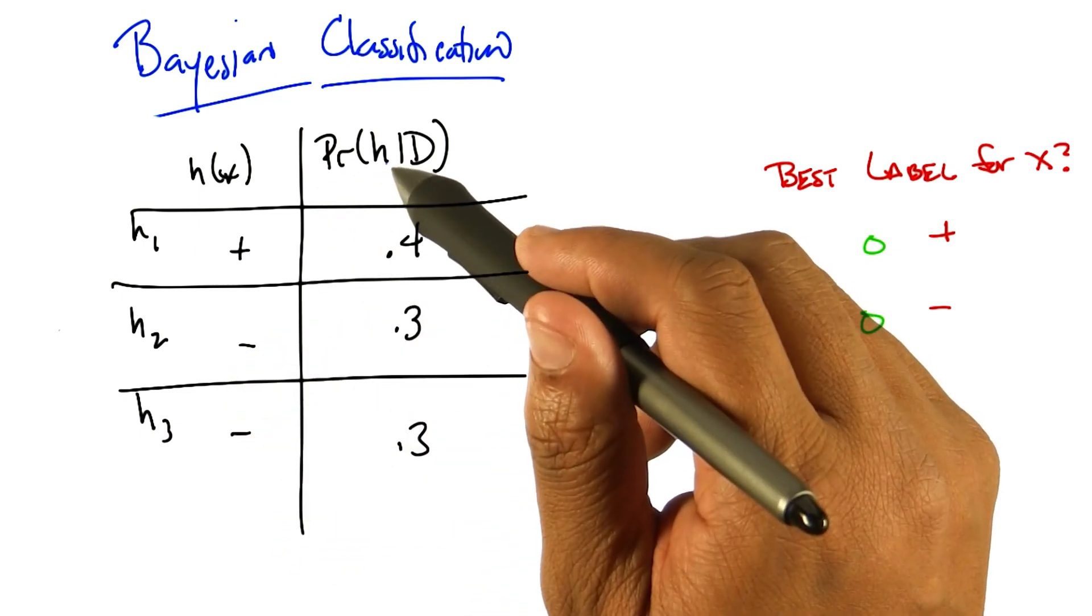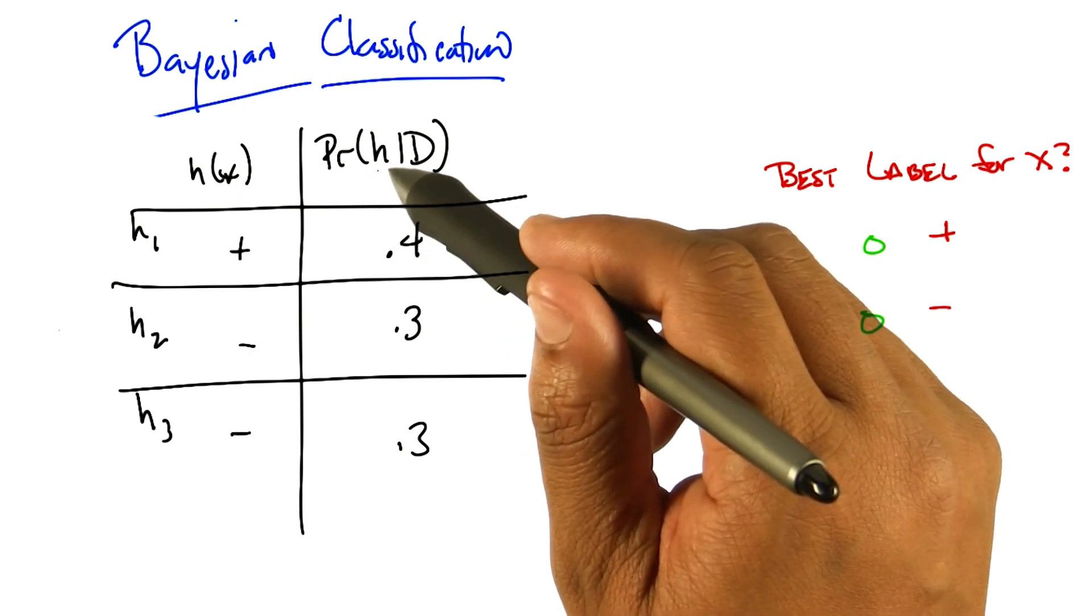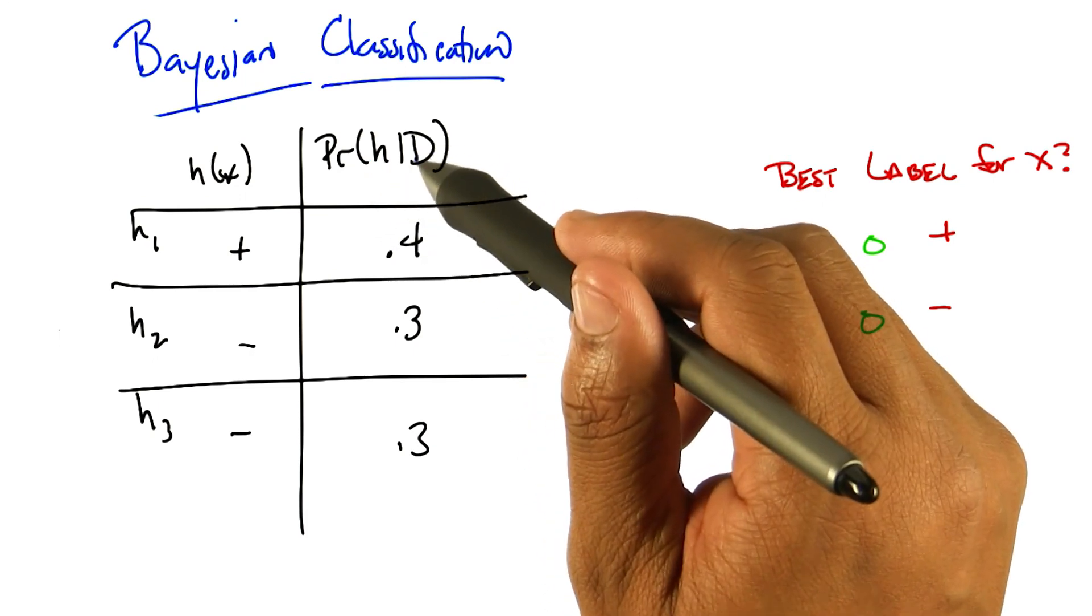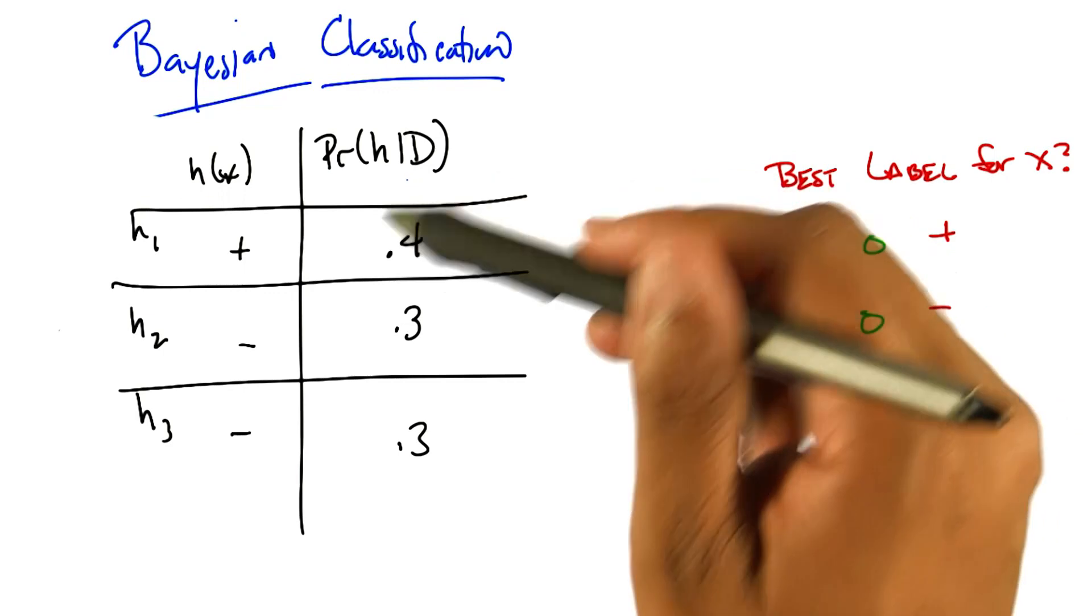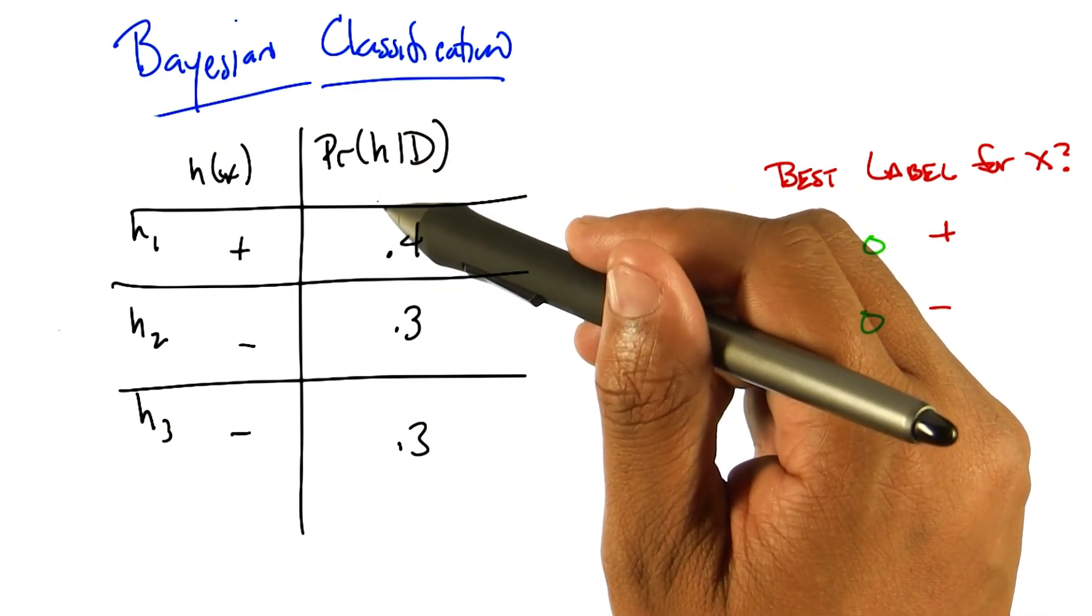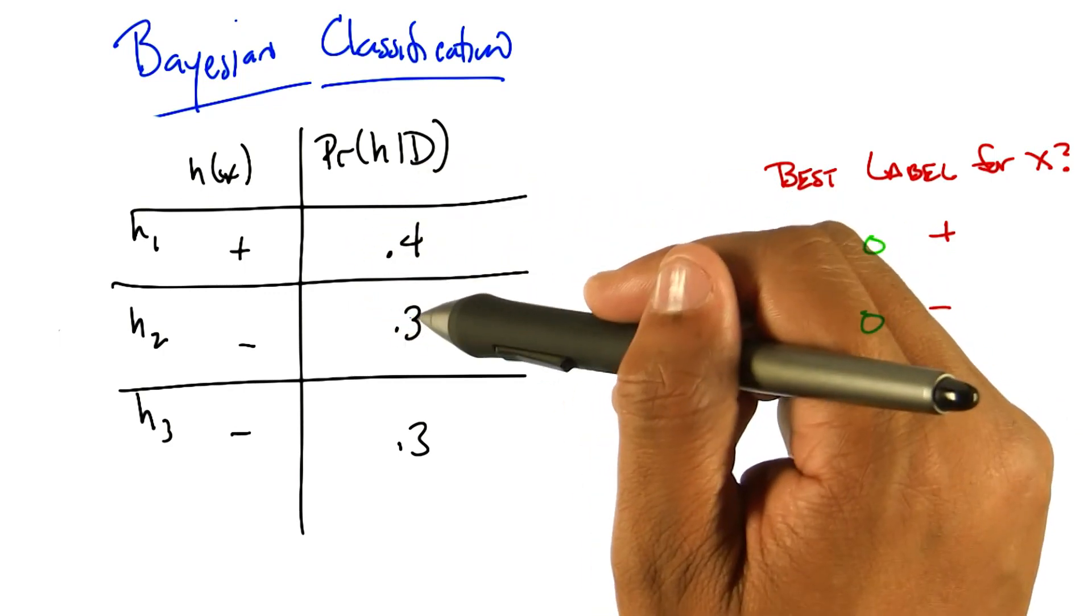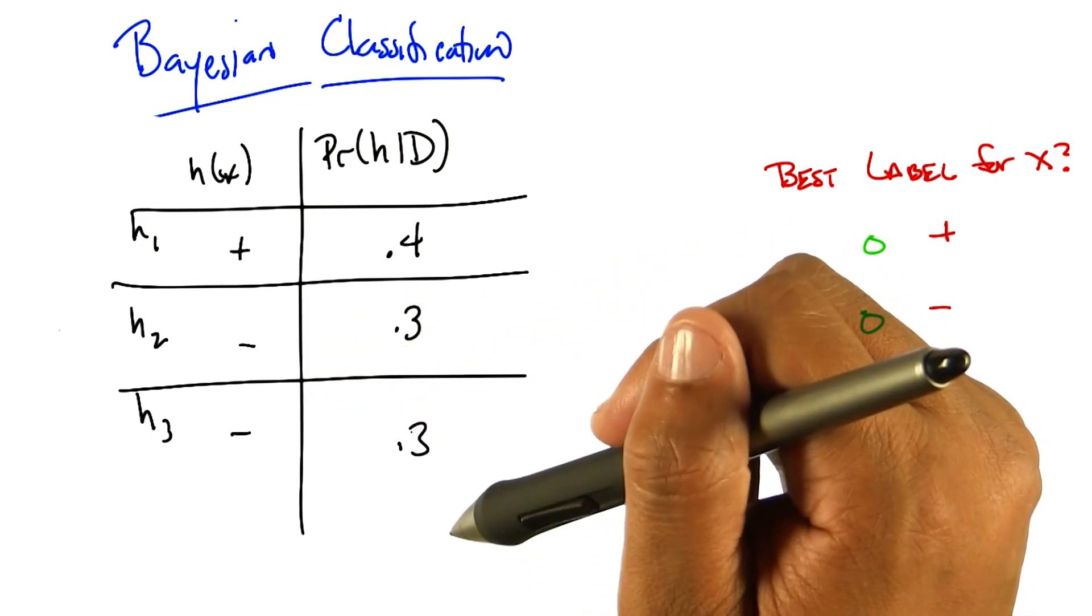Now we've already made it easy for you and we've computed the probability of a particular hypothesis given some set of data. I'm not showing you the data, but I'm showing you the answer for it. So, the probability of h1 given the data is 0.4, h2 is 0.3, and h3 is 0.3. Got it?